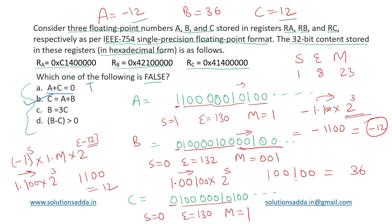Third one: B equal to three times C. This is correct because 36 is 12 thrice. The last one: B minus C is positive. Yes, this is also true. So the only false option we got is B, so that will be our answer.